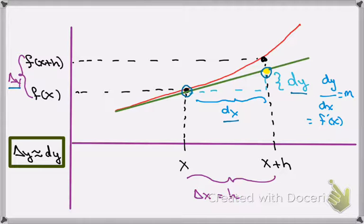So dy divided by dx is equal to f prime of x. Now you might notice immediately that this is very similar to the Leibniz notation, and that's one of the beauties of that notation. Because when we're talking about differentials, we can use that notation to help us remember what dy is.